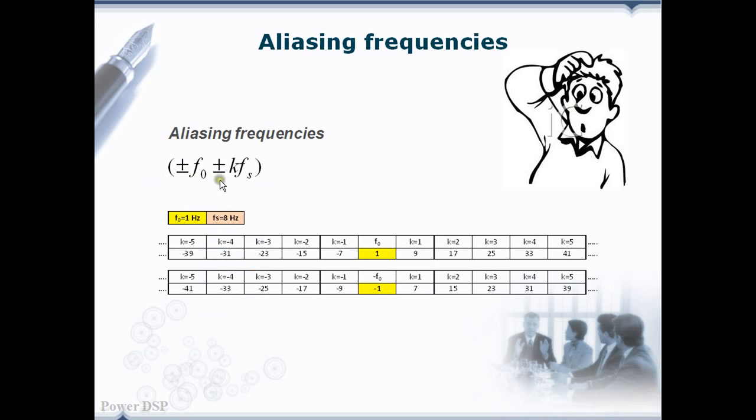F0 is positive or negative and similarly K is positive or negative. In our above example, we have chosen F0 as 1 Hz. Fs is equal to 8 and K is equal to 1. We can see here other components that produce the same samples with the sampling frequency of 8 Hz. These components are called aliasing frequencies.